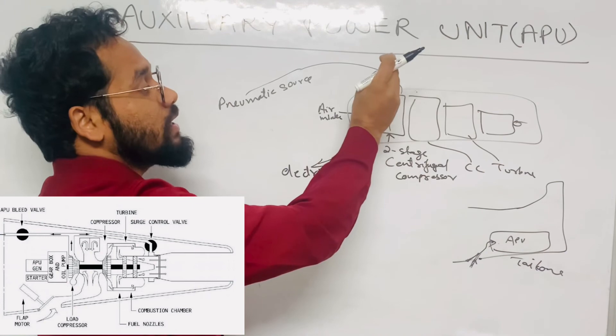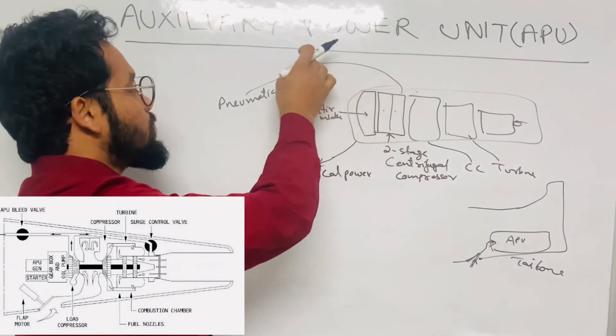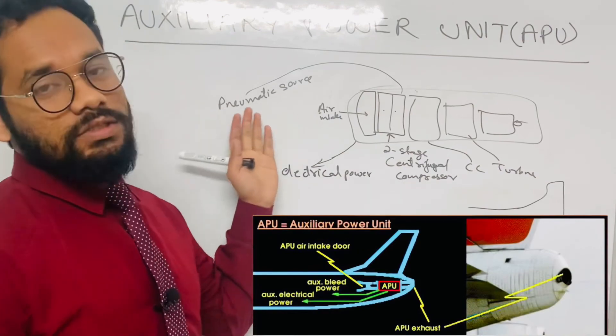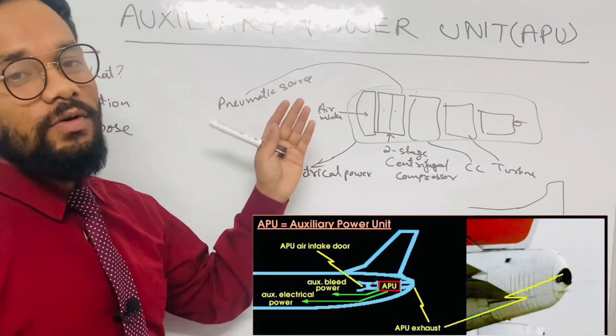I repeat again, the air from the compressor stage of the APU is given to a component called as a load compressor. That load compressor feeds supply to the air distribution system of the aircraft wherever this supply is required, in the form of pneumatic supply.